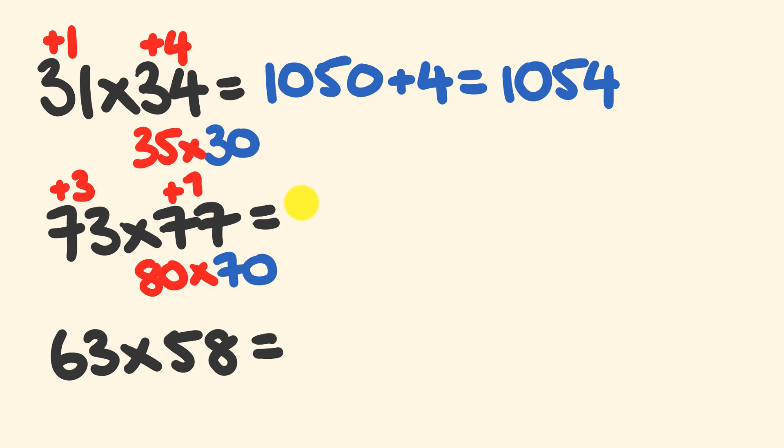80 times 70, that's a really easy question, right? That's going to be 5,600. Alright. And now what we do is we go 3 times 7. 3 times 7, that's equal to 21. A nice, easy question to answer. 5,621.